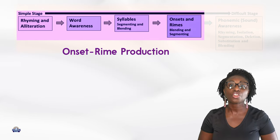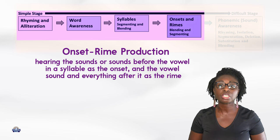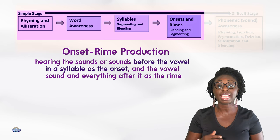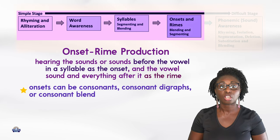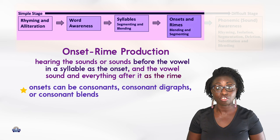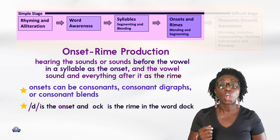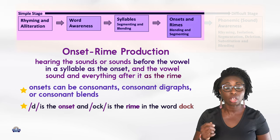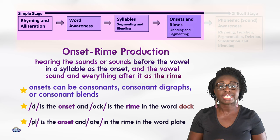Onset-rhyme production: onset-rhyme production is hearing the sound or sounds before the vowel in a syllable as the onset, and the vowel sound and everything after it as the rhyme. For example, in the word 'duck', 'd' is the onset and 'uck' is the rhyme. In the word 'plate', 'pl' is the onset and 'ate' is the rhyme.